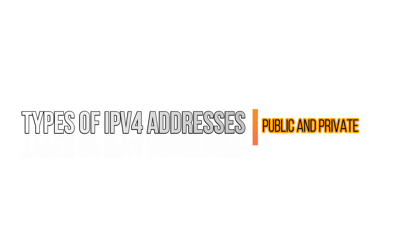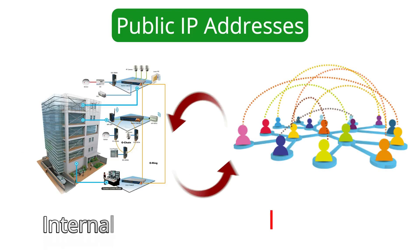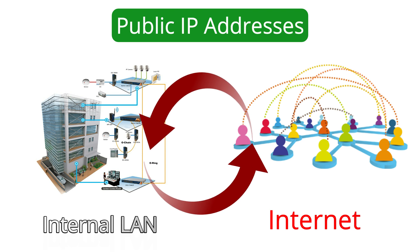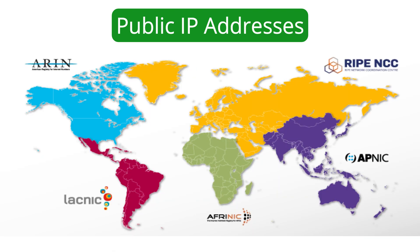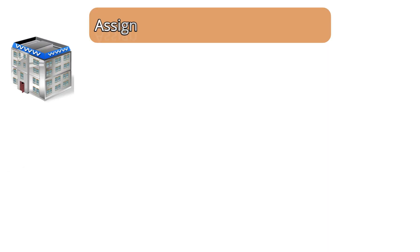Now let's move to the last aspect of the IP addresses in this video: the types of IP addresses. We can find two types of IP addresses, public and private. Public IP addresses let us forward the traffic of our internal network through the internet, or vice versa. In the last video, I told you that IANA assigns the IP addresses through the five regional internet registries around the world, and each of them assigns those IP addresses to the internet service providers.